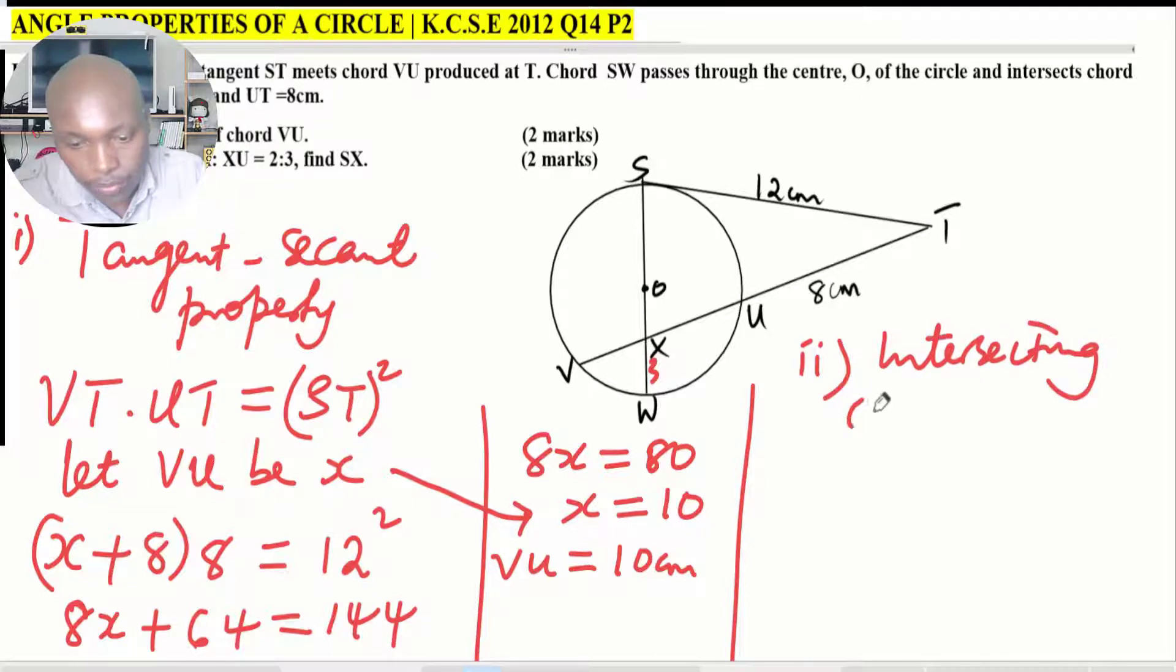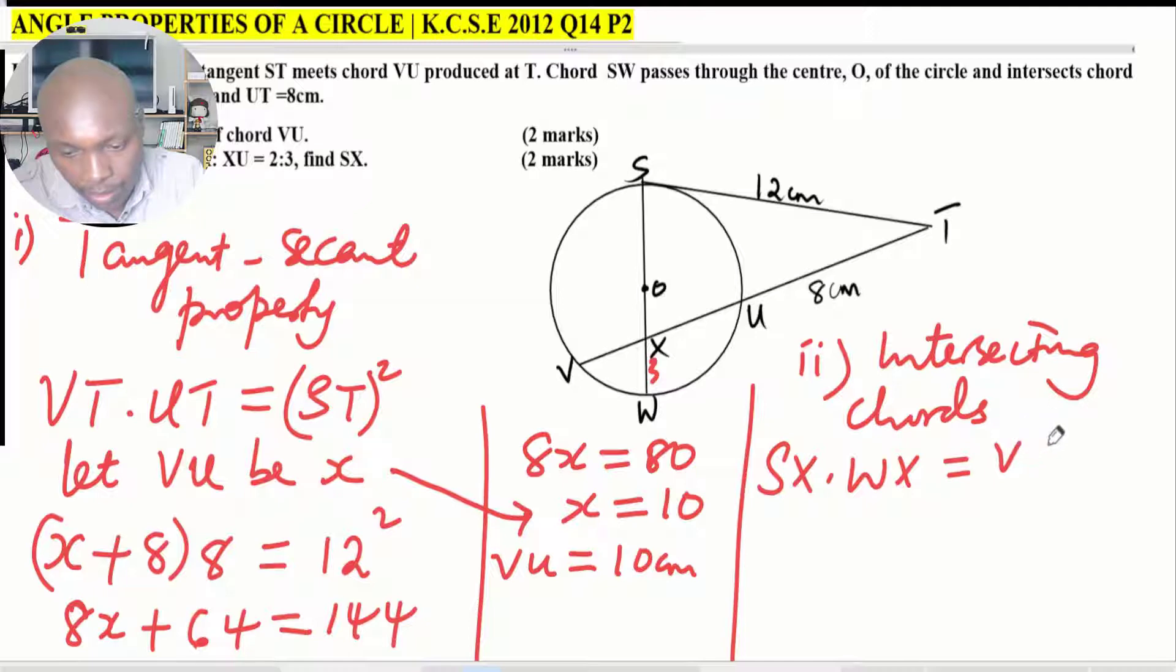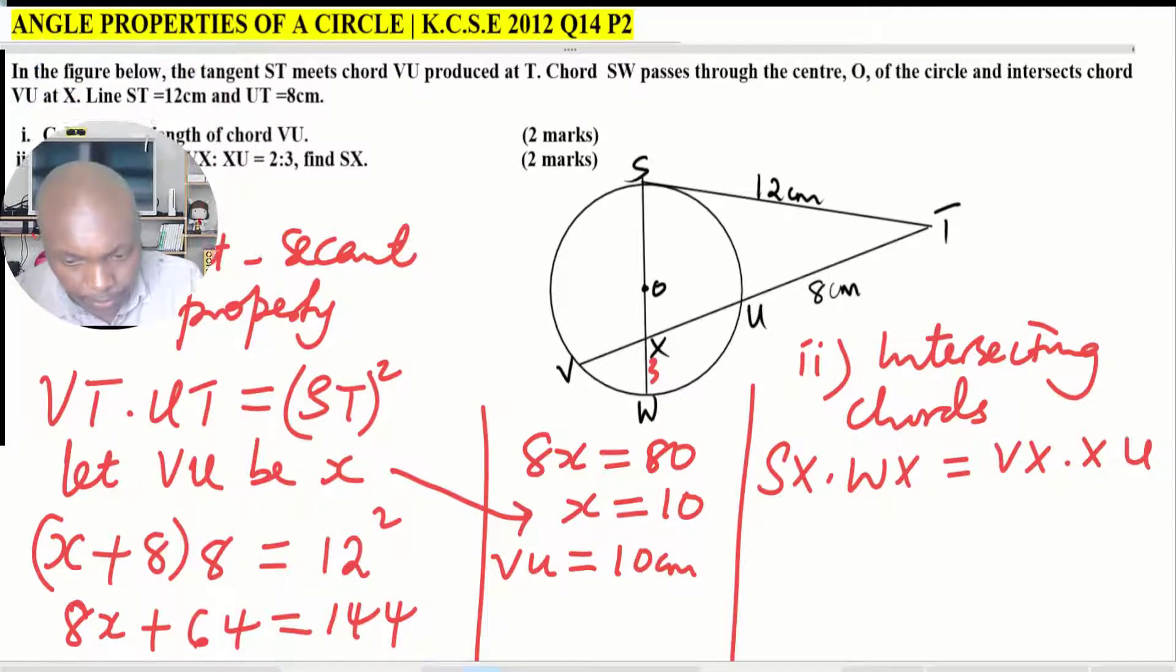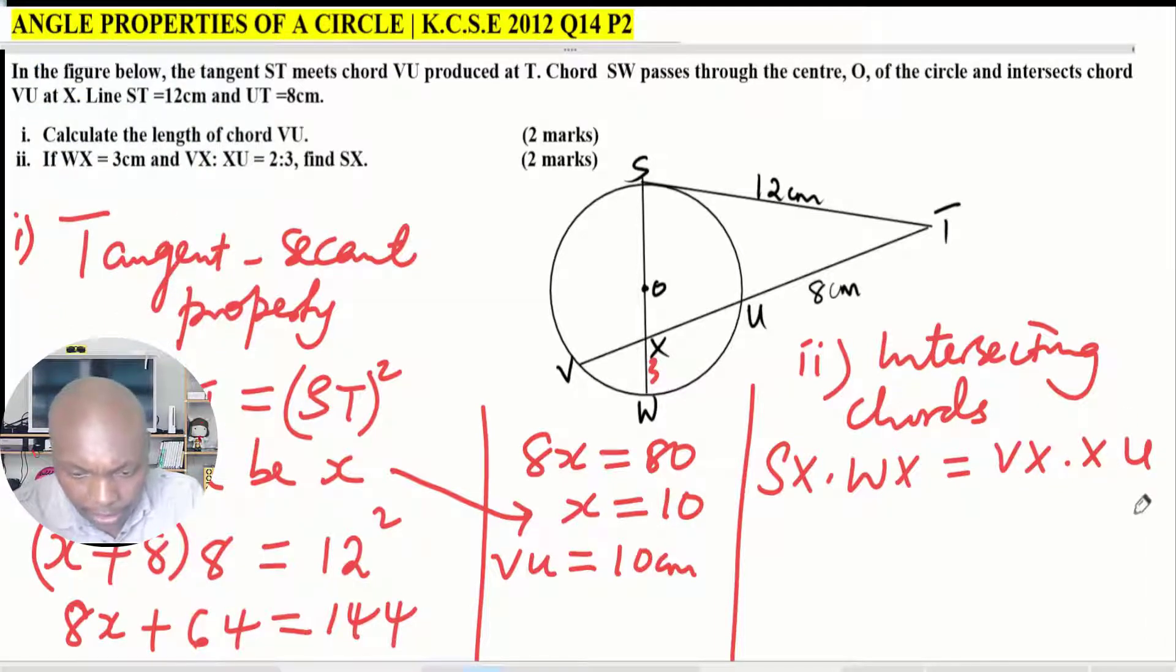We shall extract the intersecting chords property from the figure. The intersecting chords are SW and VU. The property that you're going to extract is SX multiplied by WX equals VX multiplied by XU.